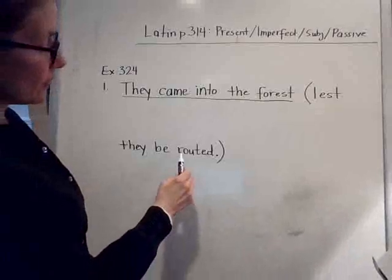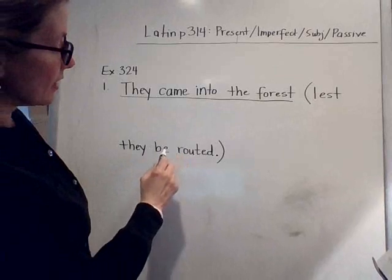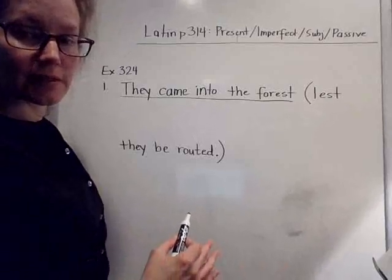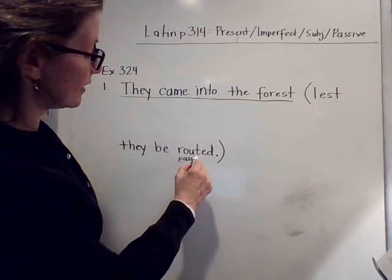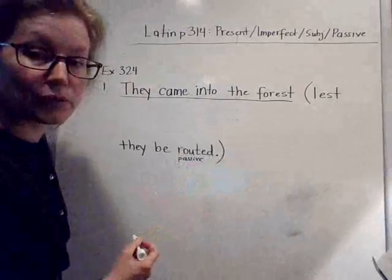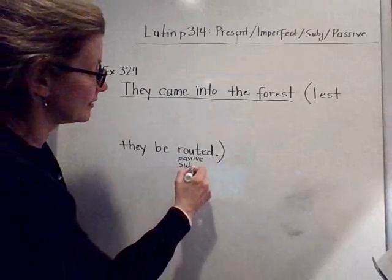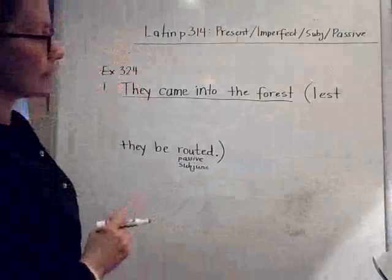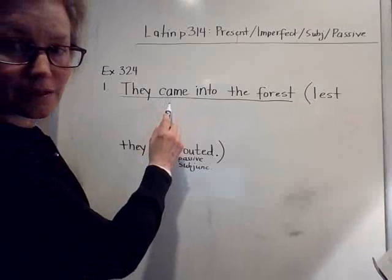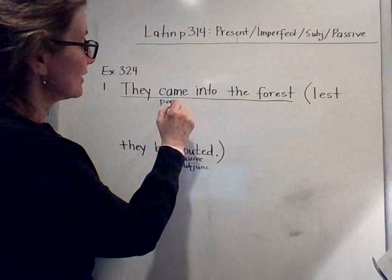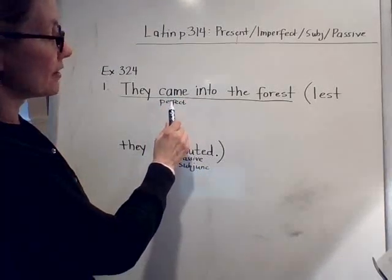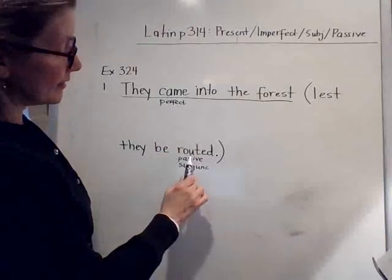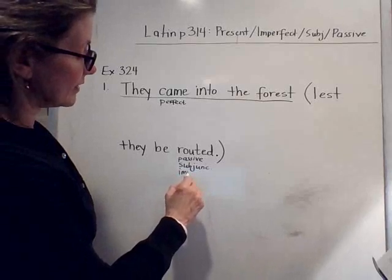Look at the verb in this purpose clause — the verb is passive: 'lest they be routed.' So instead of them doing the routing, they are being routed. That is the passive voice. Also, because this is a purpose clause, the mood is going to be subjunctive. The verb 'they came' is perfect tense, which is a secondary tense, so the verb in the purpose clause is going to be in the imperfect.